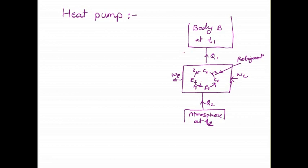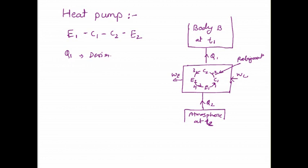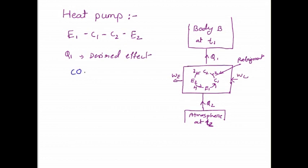The heat pump works on a cyclic process with the working fluid operating in all four devices: evaporator E1, compressor C1, condenser C2, and expander E2. The process is the same as the refrigerator, but here the main focus is on Q1 — the desired effect for the heat pump. In the refrigerator the desired effect was Q2. So the COP of the heat pump is Q1 divided by W, and the formula for COP of the heat pump is Q1 divided by Q1 minus Q2.